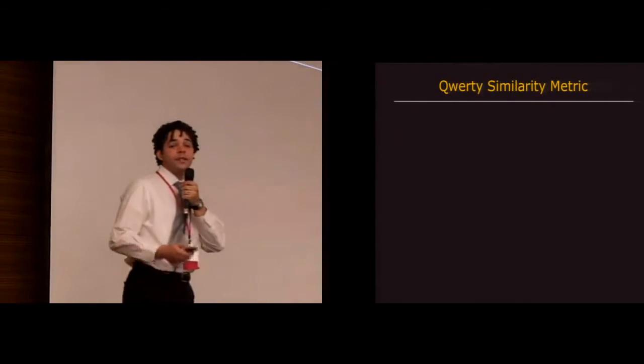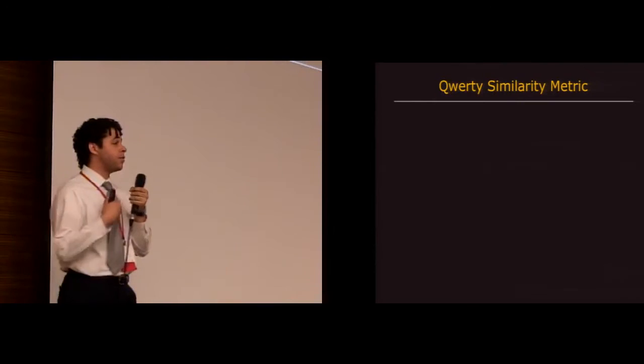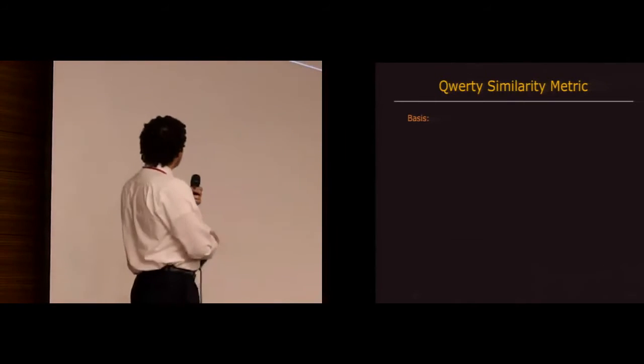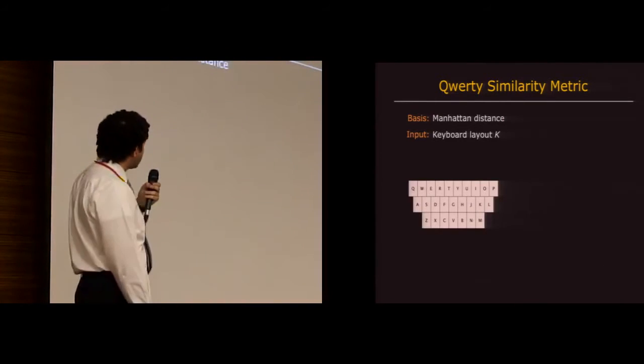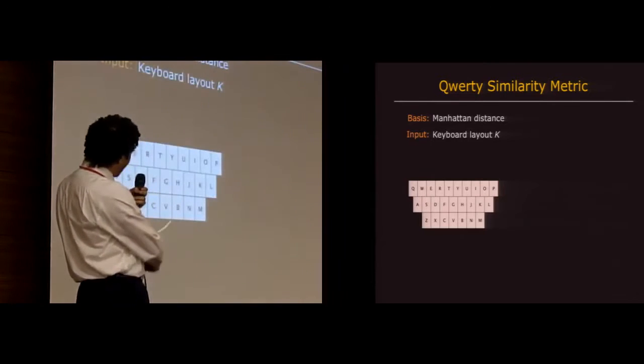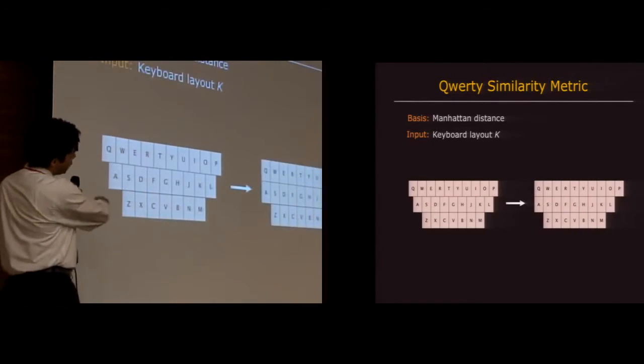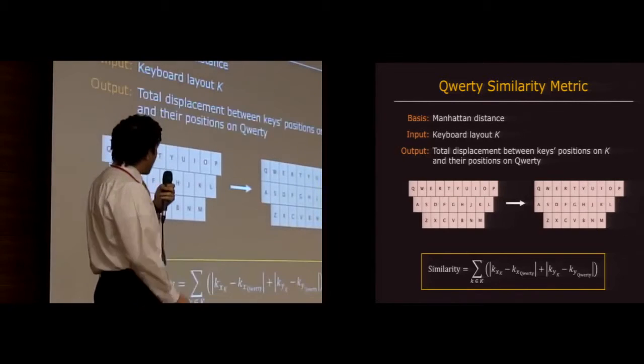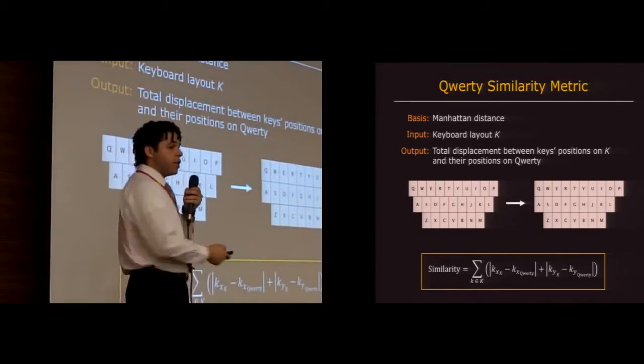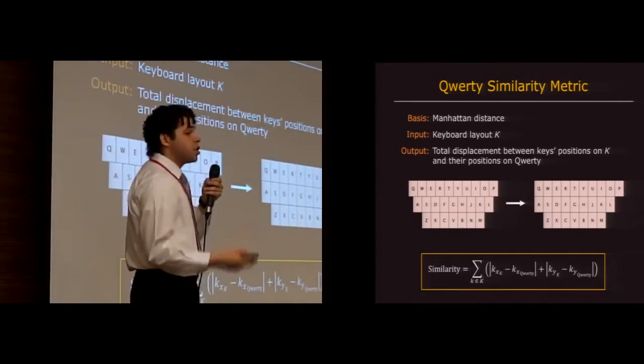And finally we have the QWERTY similarity metric, which is our proxy for learnability. So this one is based on Manhattan distance. It takes a keyboard layout K as input and it treats it as if it's aligned on a grid, and then outputs the total displacement between keys on K and their positions on QWERTY.